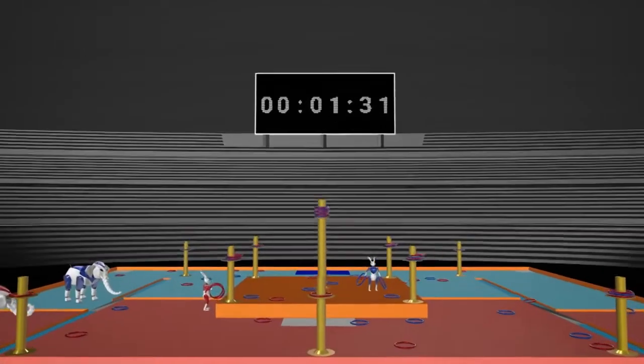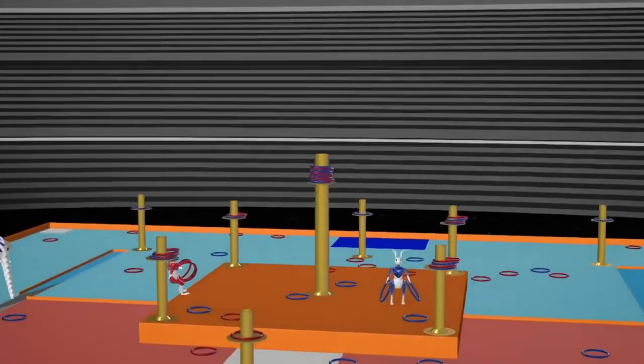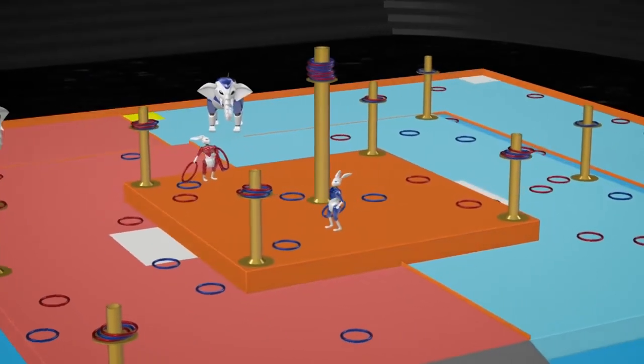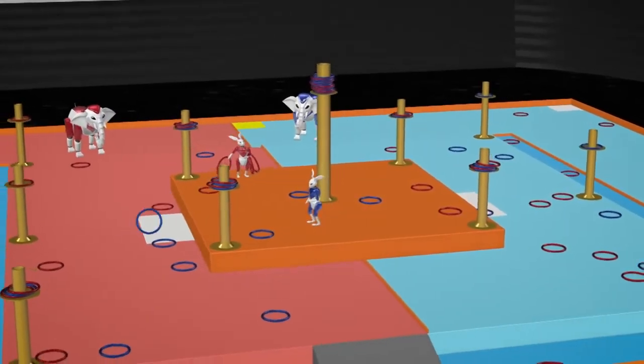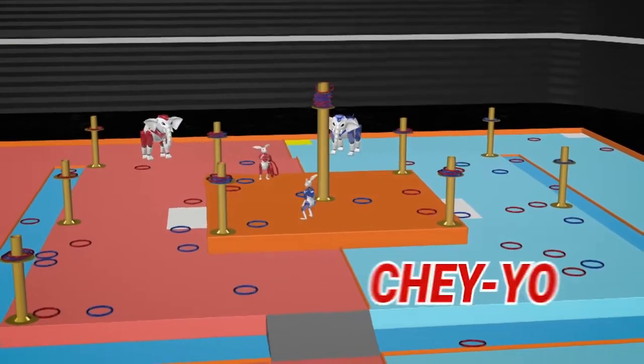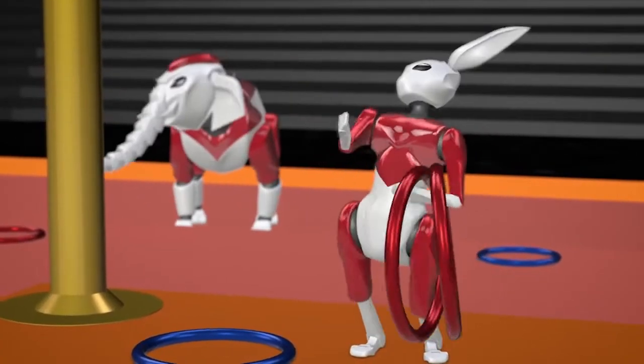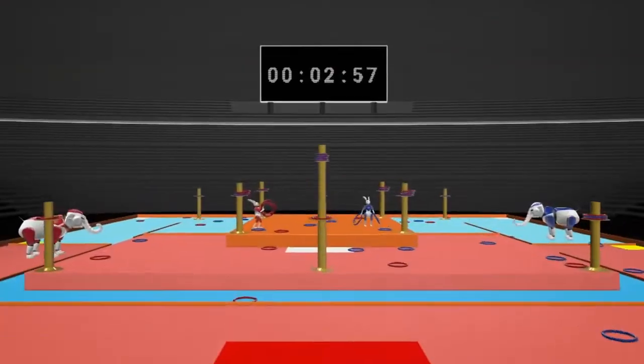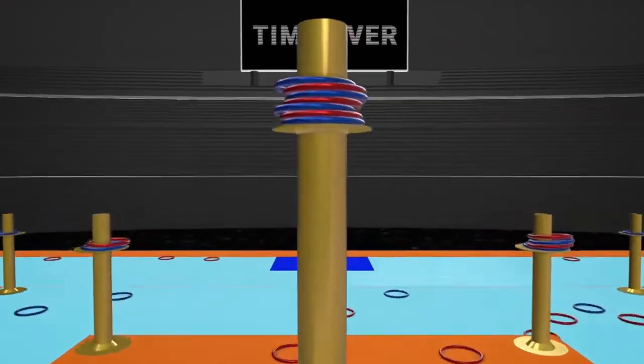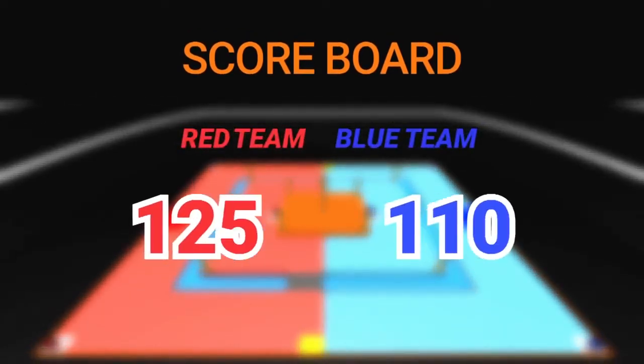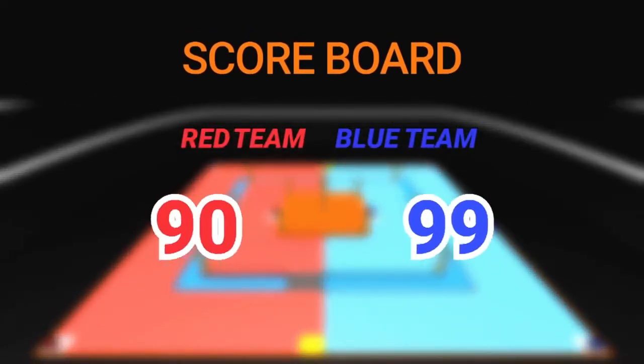The game ends if one of the following conditions are met. The team who get their top rings in all of each pole, they will achieve J-Yo and become the winner. Or after 3 minutes past, the winner will be decided in the following order. The team with higher scores, or if there is a tie.